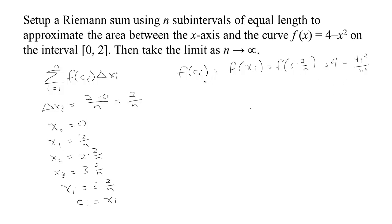Now I know for each sub-interval what the height of the function at the end of that interval is. I can multiply that by the width, so f(cᵢ) times Δxᵢ is going to be 4 minus 4i² over n².